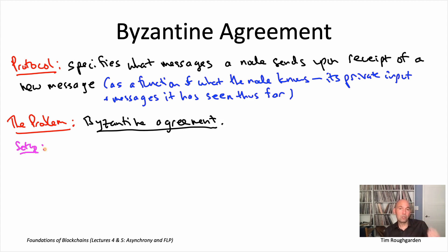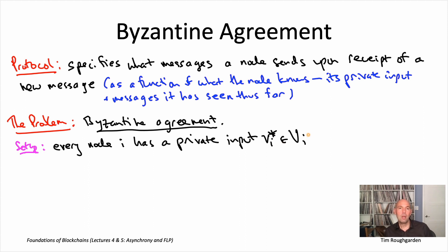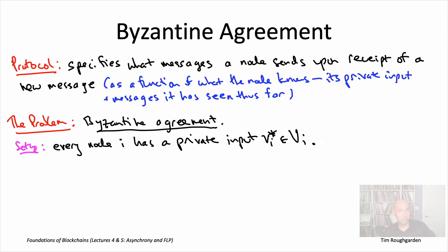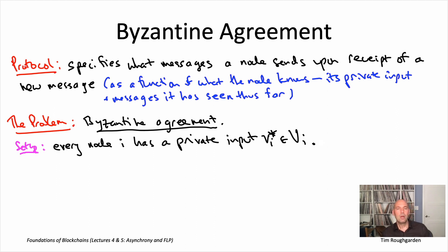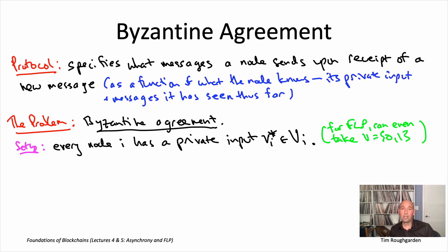In Byzantine broadcast, one distinguished node was the sender — known up front — and only the sender had a private input; the rest of the nodes started knowing nothing. In Byzantine agreement, the big difference is there is no distinguished sender. All nodes play exactly the same role and all have their own private input. We denote by V* i the private input that node i begins the protocol with, drawn from some set capital V of possible values. For our purposes, capital V can be as simple as just zero and one.